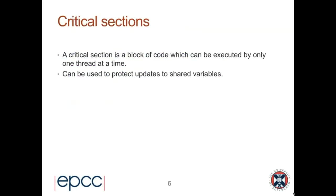Moving on to critical sections. A critical section is a block of code which can be executed by only one thread at a time. It may be executed by many different threads, many times, and in any order, but only one thread at a time can be executing it. This is exactly the construct we need to protect updates to shared variables.